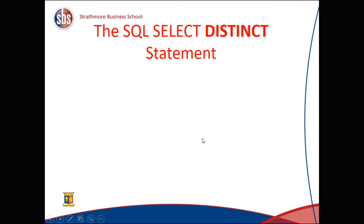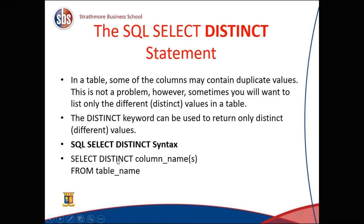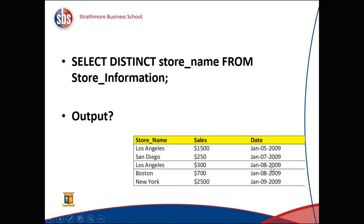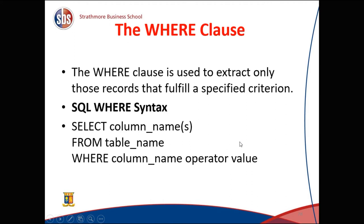The SQL SELECT DISTINCT statement is used when a table contains duplicate values but you only want to list the distinct values. The syntax is: SELECT DISTINCT column_name(s) FROM table_name. For example, SELECT DISTINCT store_name FROM store_information returns Los Angeles, San Diego, Boston, and New York — the Los Angeles duplication is no longer displayed.